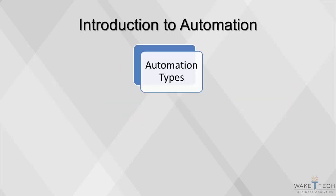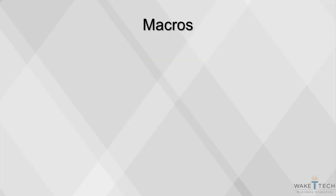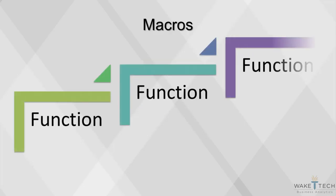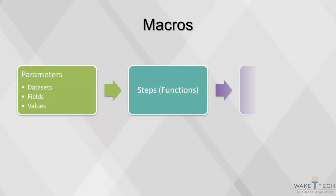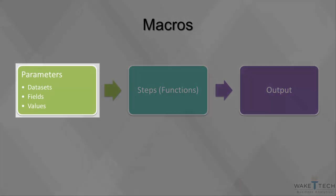There are two main types of automation used in business analytics: macros and stored procedures. Macros are also referred to as functions. The purpose of macros is to easily replicate certain steps without having to write out those steps individually. Macros can make an analysis quicker and more concise.